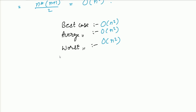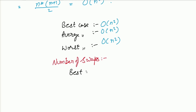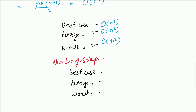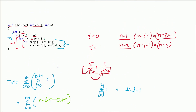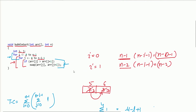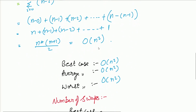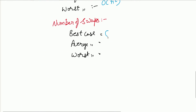Sorting algorithms can also be compared on the basis of number of swaps. In the best case for bubble sort, we try to minimize swaps. If the array is already sorted, the if condition is never true and we never swap any element, so the number of swaps in the best case is 0.